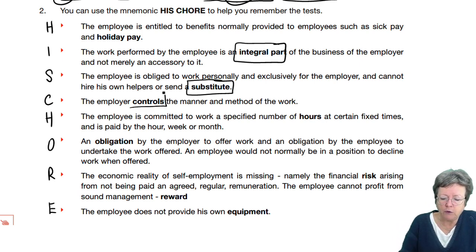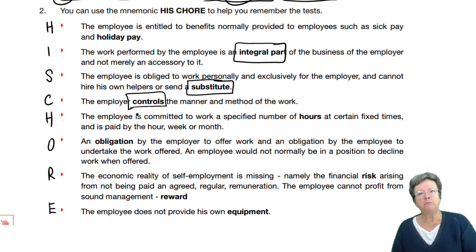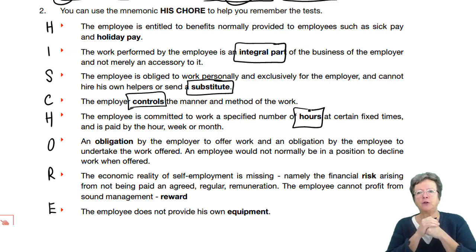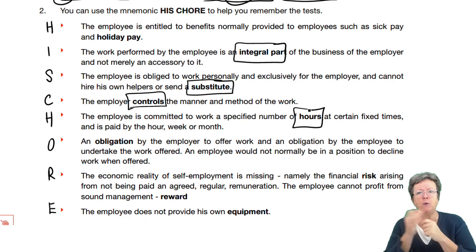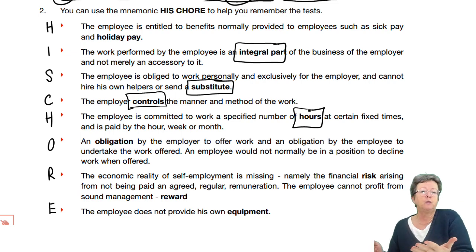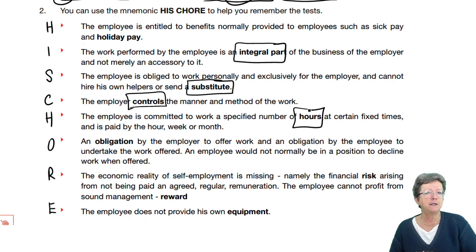C: Normally the employer will control the manner and method of work, and specific hours. So they will tell you when to come in. You will go, work for an accountant, and they will say when you come to work, what you've got to do, how you've got to do it — with fixed times, say nine to five with lunch at one o'clock. If you were self-employed, to a large extent, you could determine when you came, when you left, and when you had your lunch.